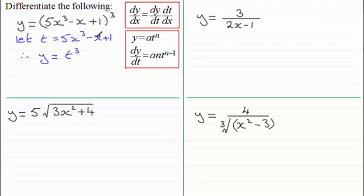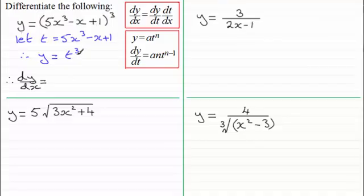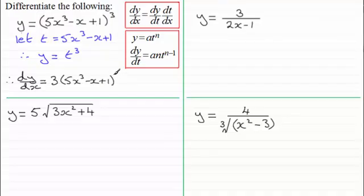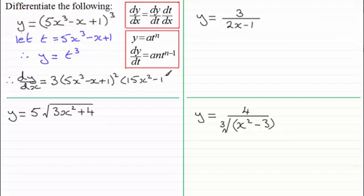So let's take this first example here. When it comes to working out what dy by dx is, then by the chain rule, we've got to do dy by dt first of all. We've got y equals t cubed in this example, so dy by dt is going to be 3t squared. But instead of writing t squared, I'm going to write t as 5x cubed minus x plus 1, and then that's to the power 2 — giving 3t squared for dy by dt. Now we need to multiply it by dt by dx, so we differentiate what we nominated t to be. If we differentiate that with respect to x, it's going to be 15x squared minus 1. So putting that in, it's 15x squared minus 1. And there we go — dy by dx.